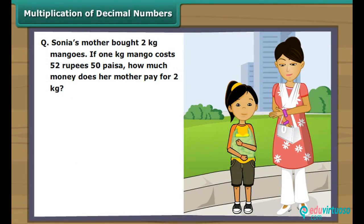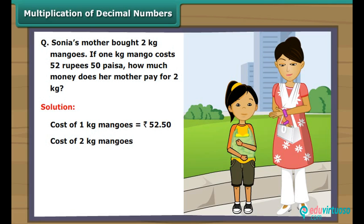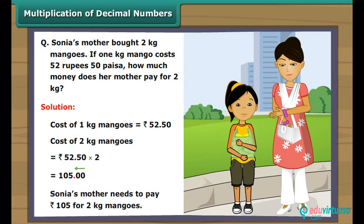We will practice a word problem based on the multiplication of decimal numbers. The cost of one kilogram of mangoes is 52 rupees 50 paisa. The cost of 2 kg mangoes is equal to 52.50 multiplied by 2 rupees. Multiplying the numbers, we get 10,500. Adding the decimal point after two digits from the right side, we get 105. Thus, Sonia's mother needs to pay 105 rupees for 2 kg of mangoes.